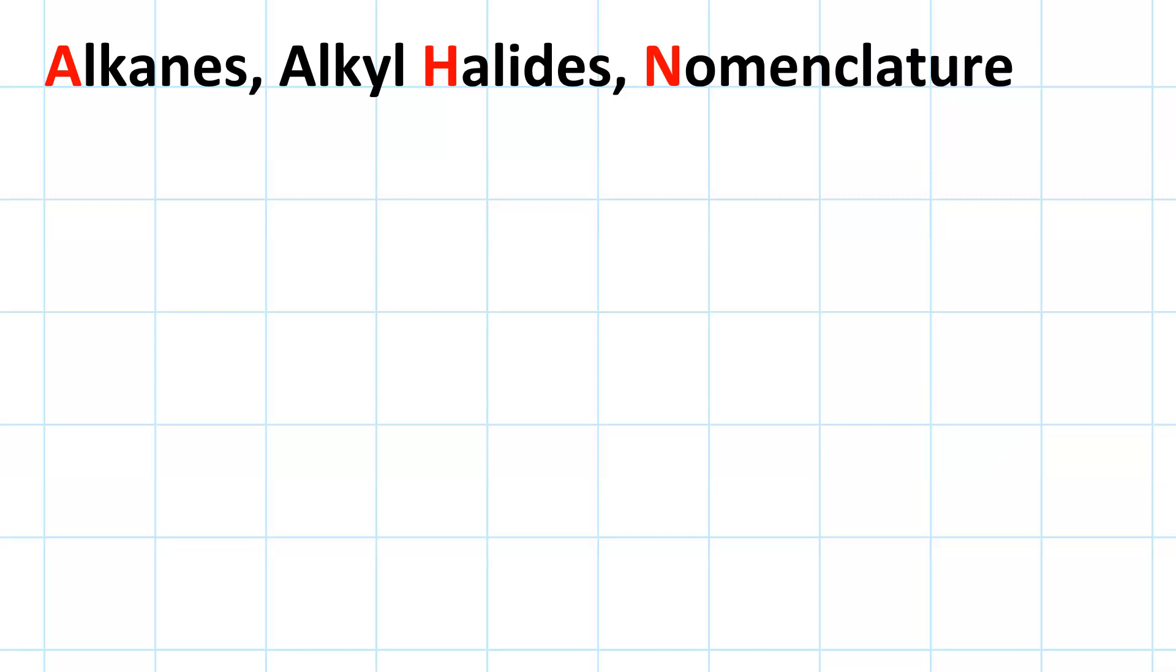Alkanes, alkyl halides, and how to name them. Generally an alkane will have the chemical formula CnH2n plus 2.